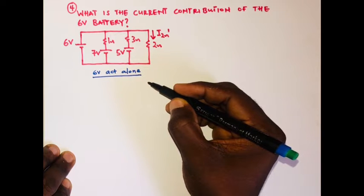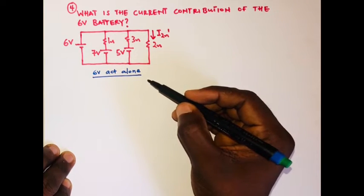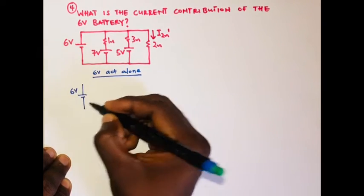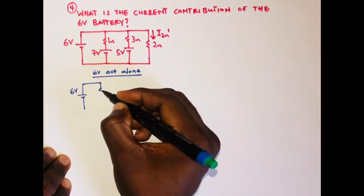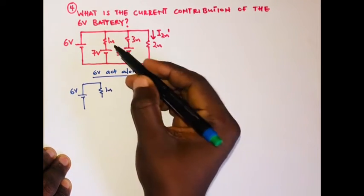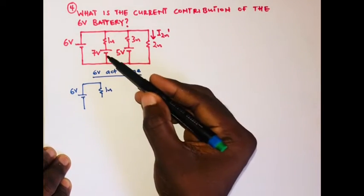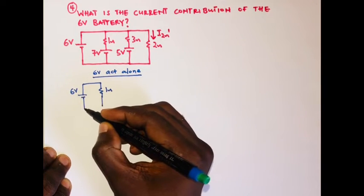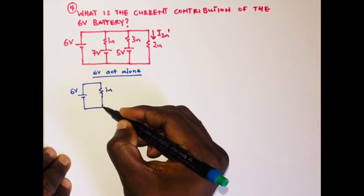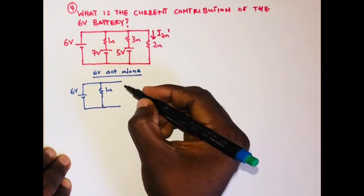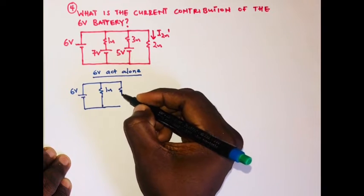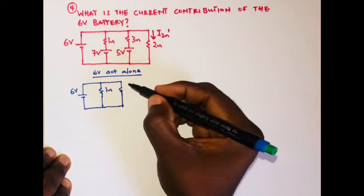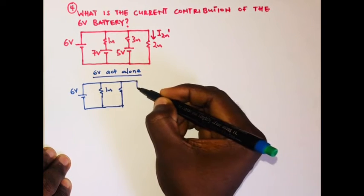If the six volt is acting alone then we need to redraw the circuit. We have the one ohm resistor, and because we have a voltage source here we are going to replace that with a short circuit. We also have the three ohm resistor, and because we still have a voltage source — the five volts — we are going to have a short circuit, and then we have the two ohm resistor.